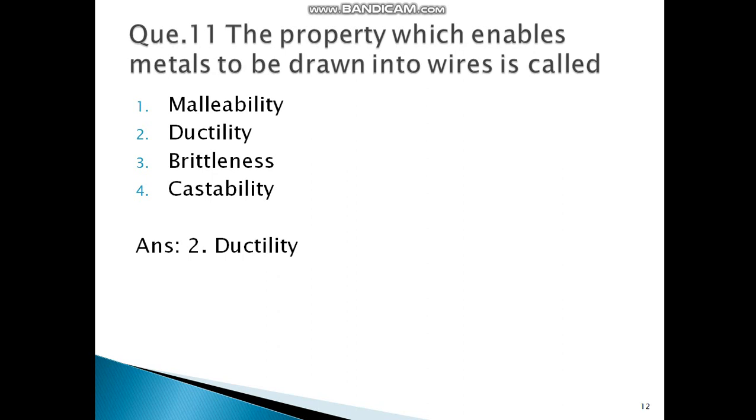The property which enables the metals to be drawn into wires is called? This is a remember level question, so you can answer it easily. First option is malleability, second ductility, brittleness, castability. Correct option for this is ductility. The same question, if it says hammered into sheets, then you have to answer as malleability. And if drawn into wires, then it is ductility.